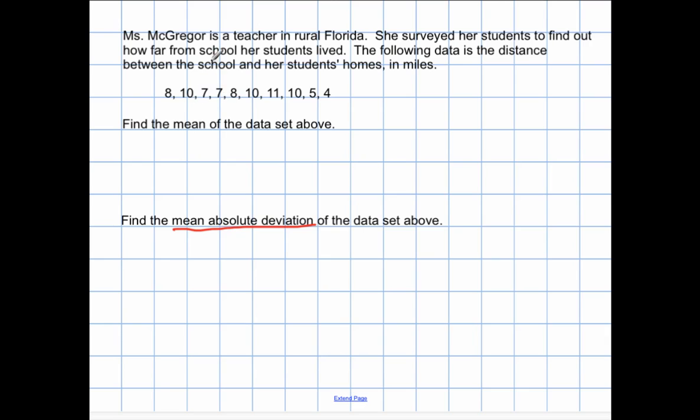The first thing we're going to do is, this is a slightly modified data set from what you've been seeing in the past if you've been watching these videos. Still the same word problem, but instead of nine observations, I now have ten observations. So I have ten pieces of data from the sample of students to figure out how far they live from home to school. Our first step in finding the mean absolute deviation is to first find the mean.